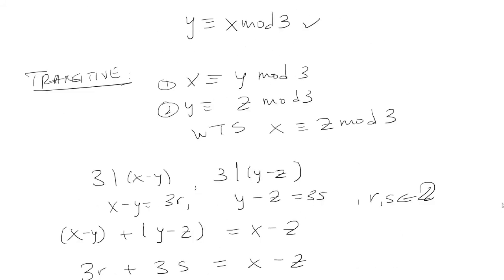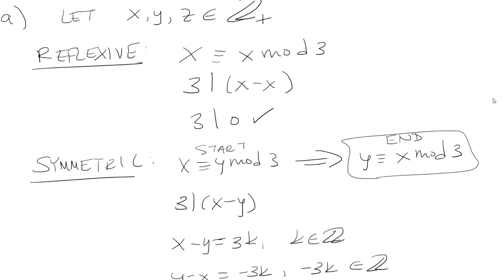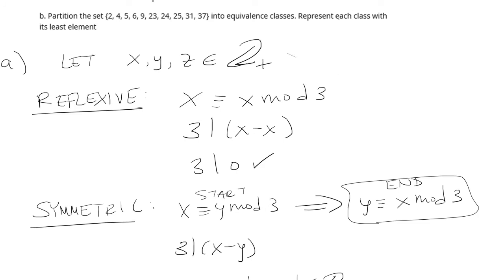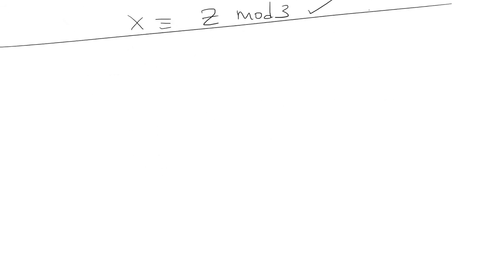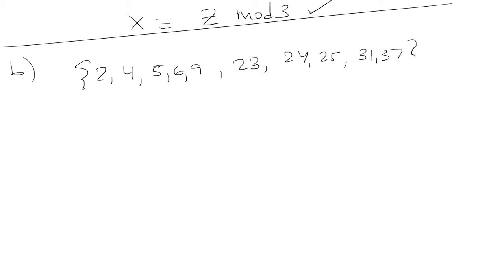Now for part b, we want to partition the set into equivalence classes and represent each class with its least element. We're looking at mod 3, so we break things up by the remainder when we divide by 3 — the remainder r can be 0, 1, or 2. The set of numbers is: 2, 4, 5, 6, 9, 23, 24, 25, 31, 37.